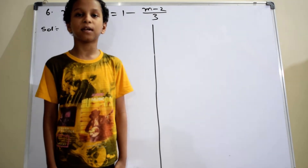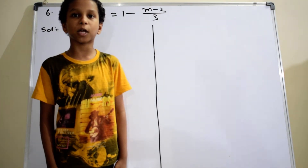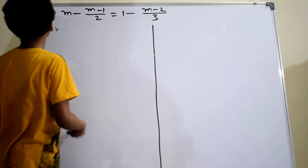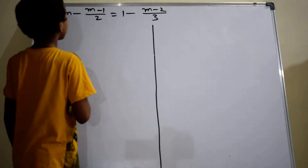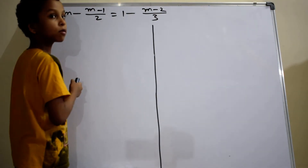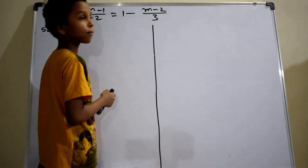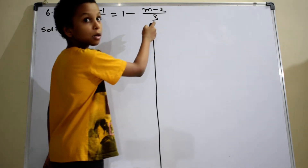Hi, I am Saif and Solution. Let's discuss the solution of the M problem. The problem is: solve M minus (M minus 1) by 2 equals to 1 minus (M minus 2) by 3.